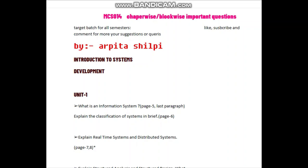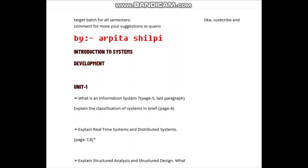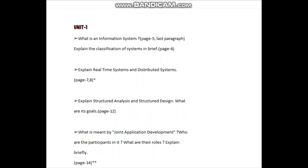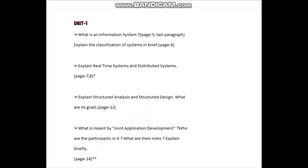I told you which group and which unit is important. You will see a link in the description box. So let's start — in Unit 1, some questions are: what is an information system, explain classification of systems in brief, and explain real-time systems.